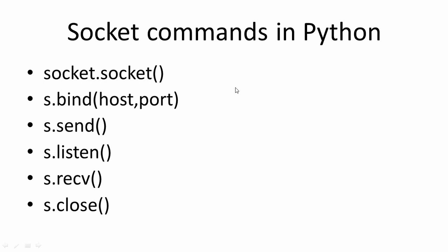The next thing we need to do is bind the IP address and the port to the socket, which the second command does: socket.bind with host and port — the IP address is also known as the host. Then it sends a message to another computer using the .send function. The receiving computer is continuously listening using the socket.listen command, and when it finally receives the message, it uses the s.receive function to decode the message.